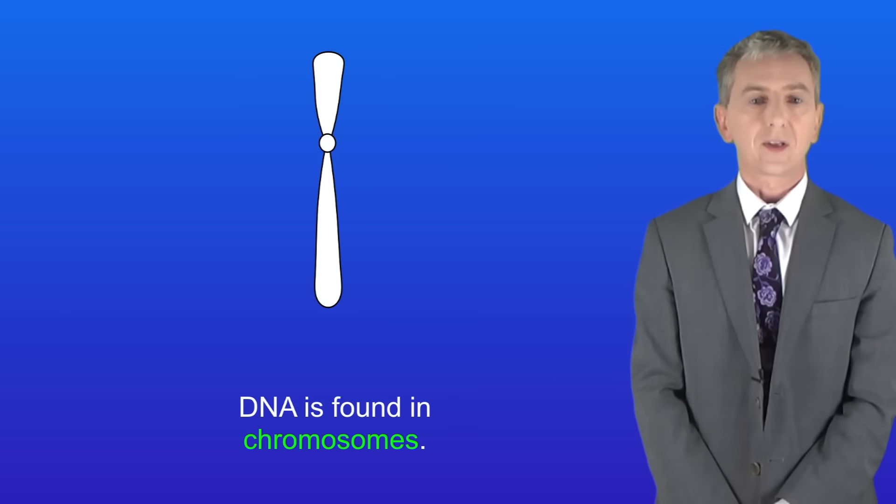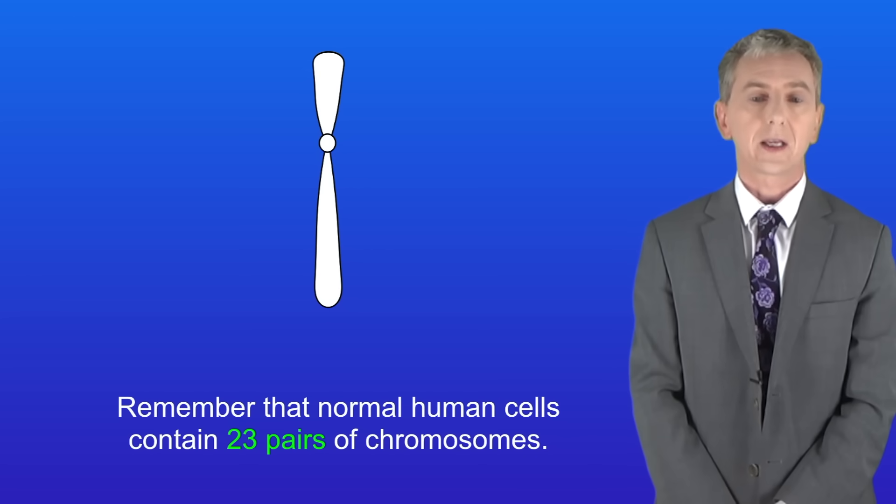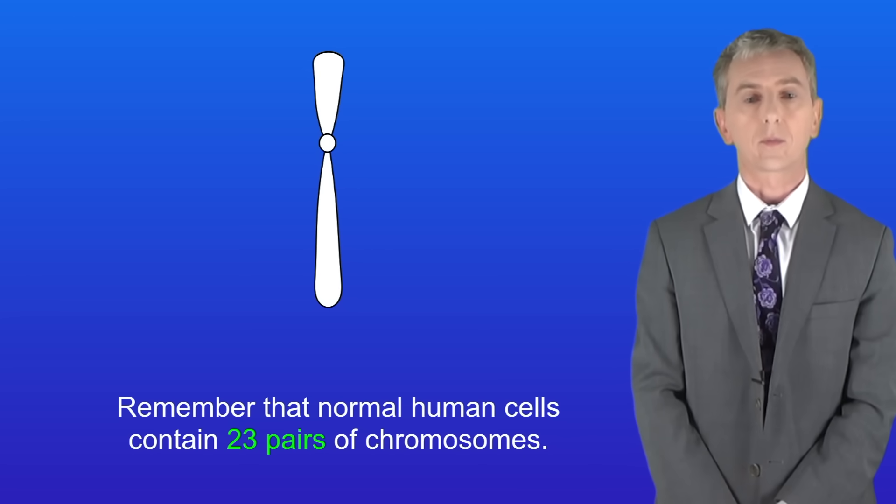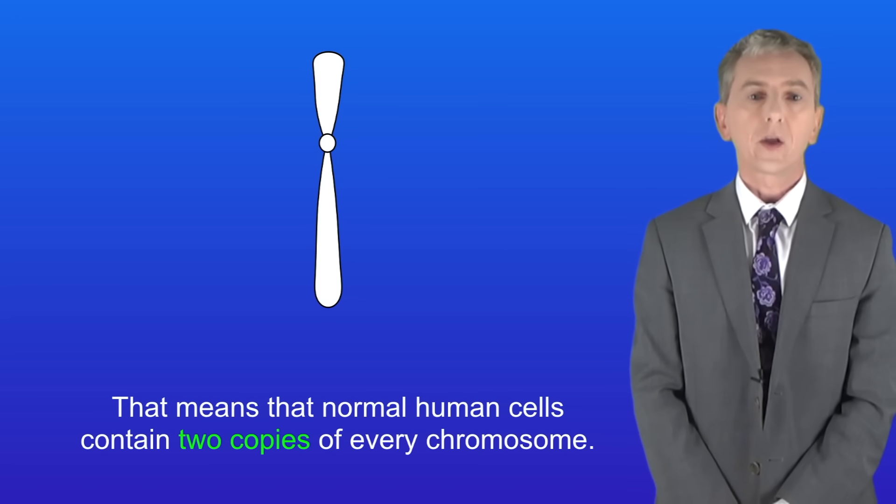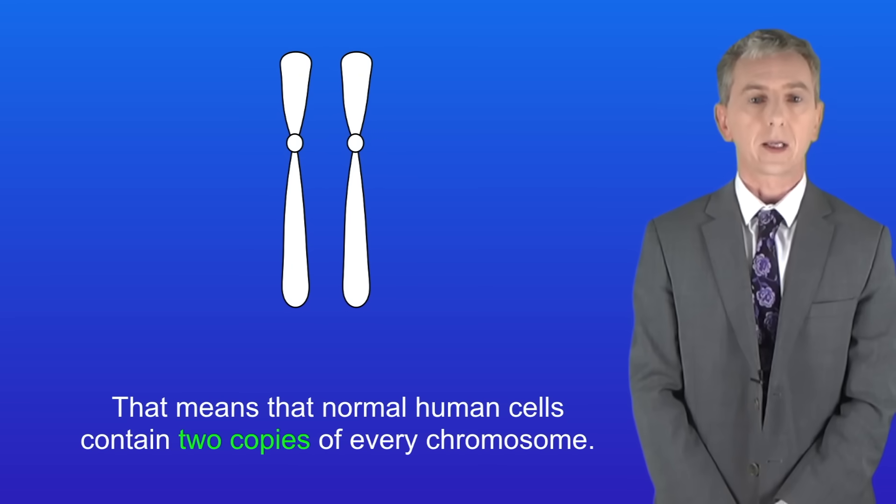In previous videos we've seen that DNA is found in chromosomes and I'm showing you here a human chromosome. Remember that normal human cells contain 23 pairs of chromosomes, so that means normal human cells contain two copies of every chromosome and I'm showing you that here.